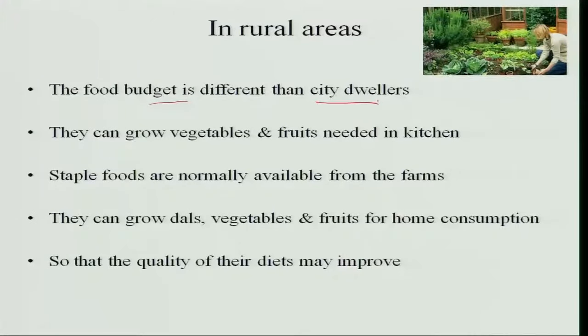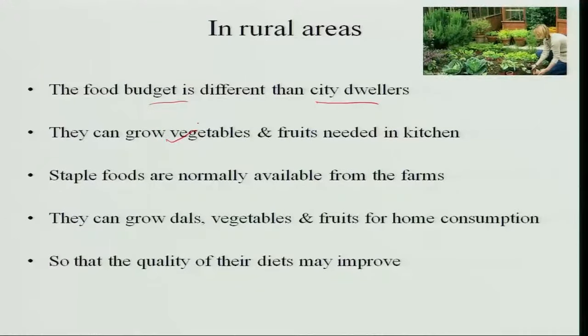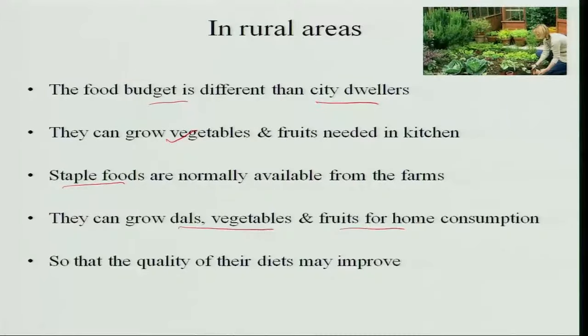In rural areas the food budget is completely different from city dwellers. Rural people are not salaried, so they cannot plan a fixed budget. However, they can grow vegetables, fruits, dals and staple foods in their own farm and kitchen garden, store staples for the entire year, and have food for home consumption. The quantity and quality of their diets will be highly improved if they include all the food groups.